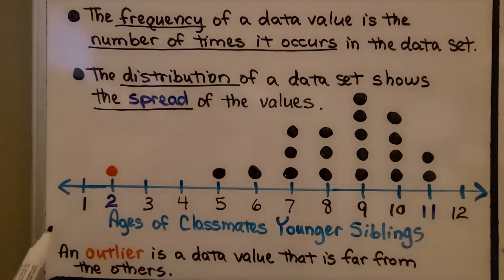So this is a dot plot of the ages of classmates' younger siblings. So this is how old all their younger siblings are. Now look at 2.